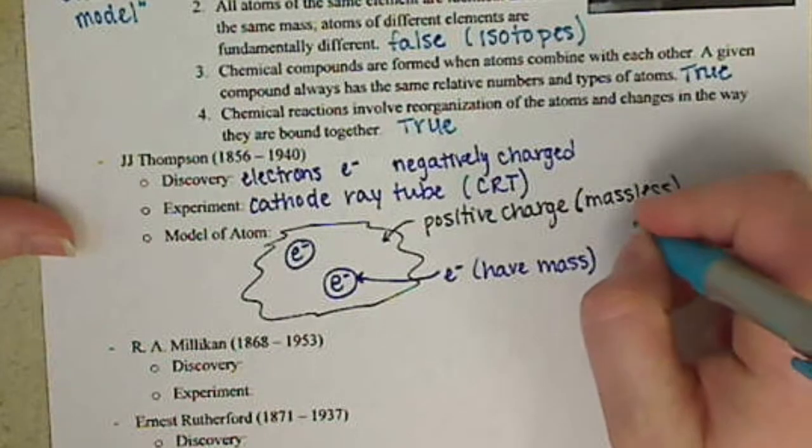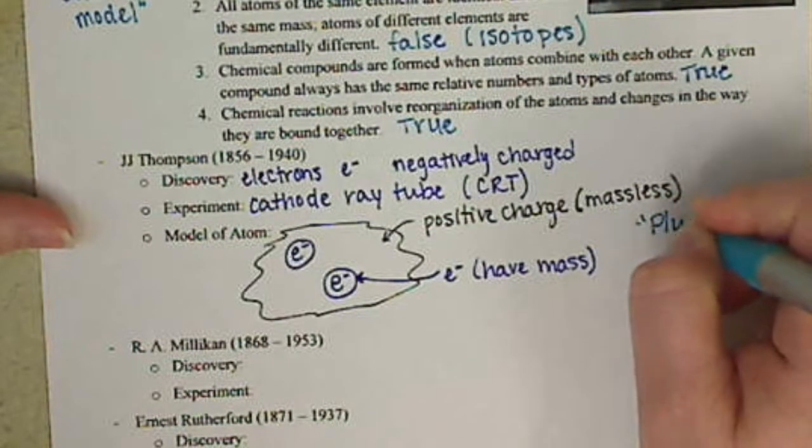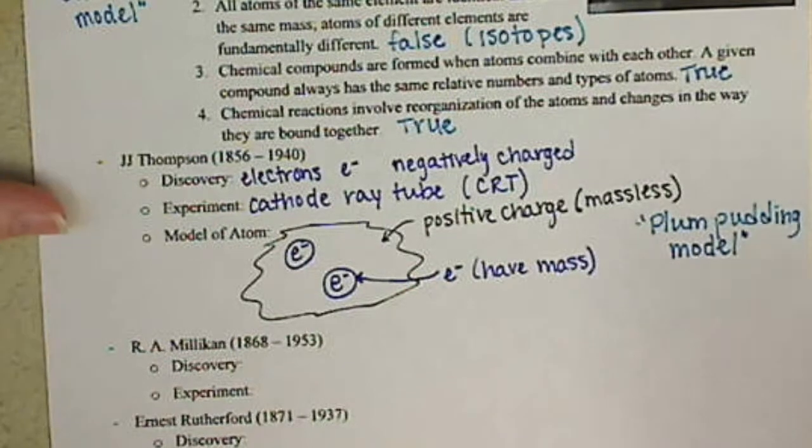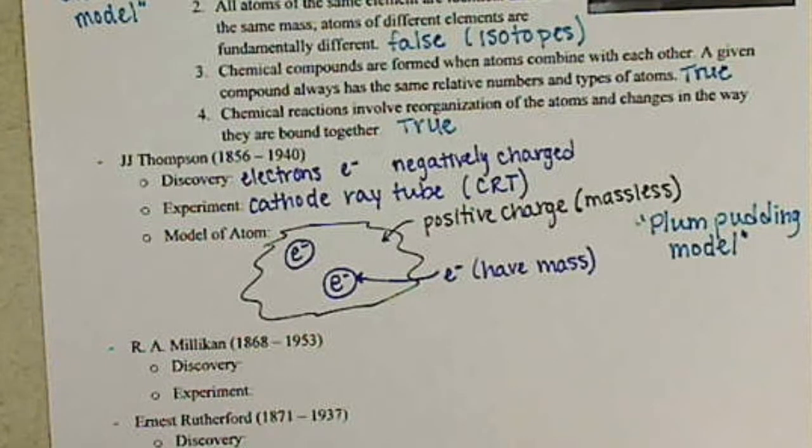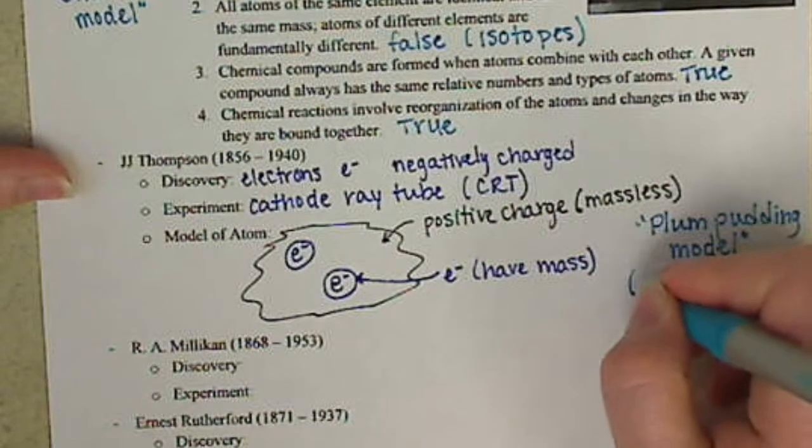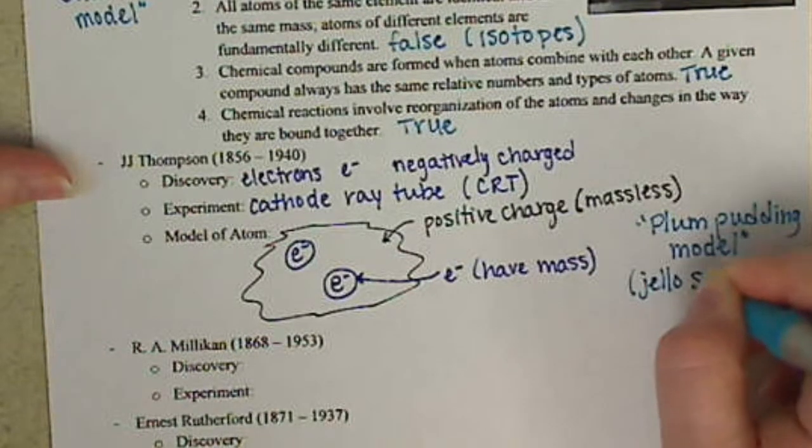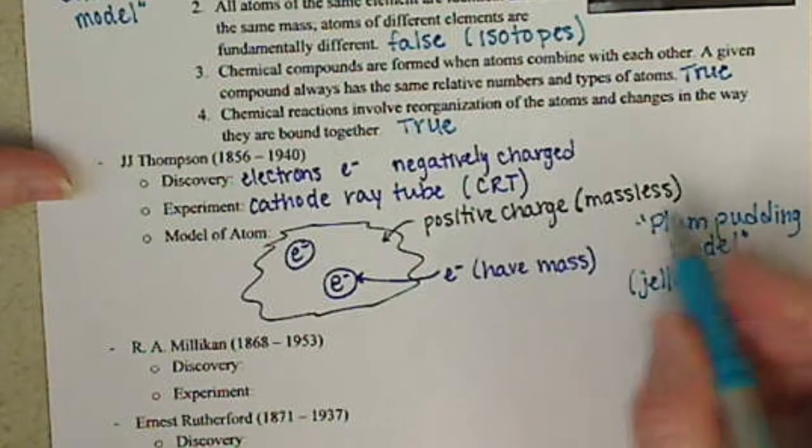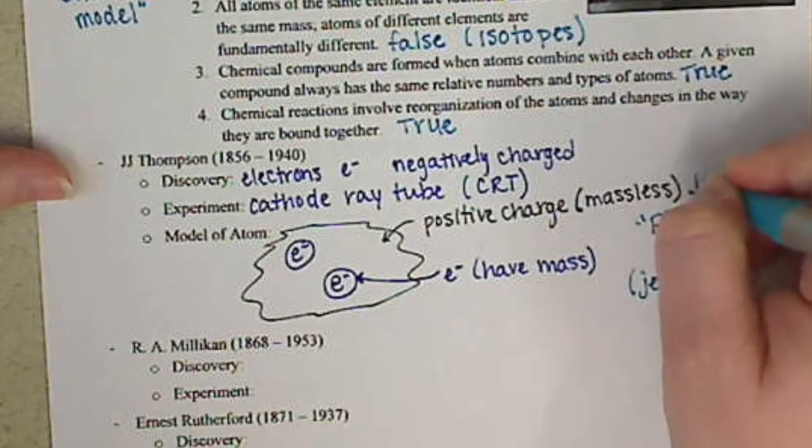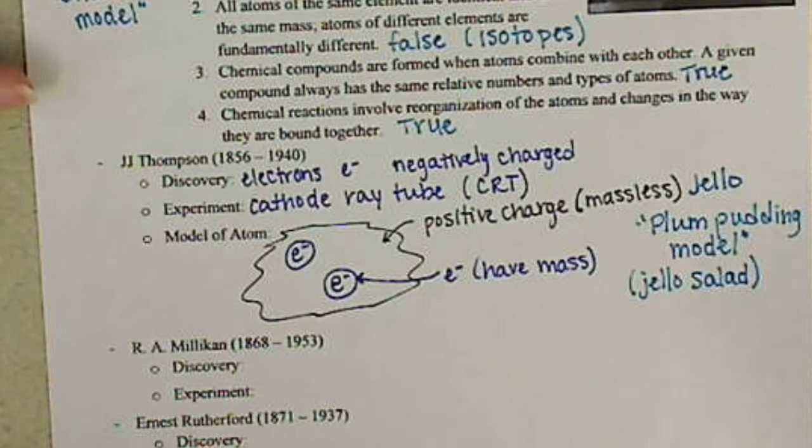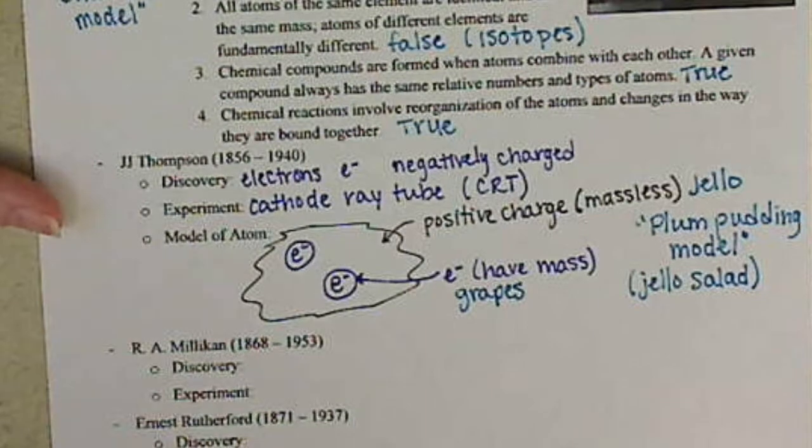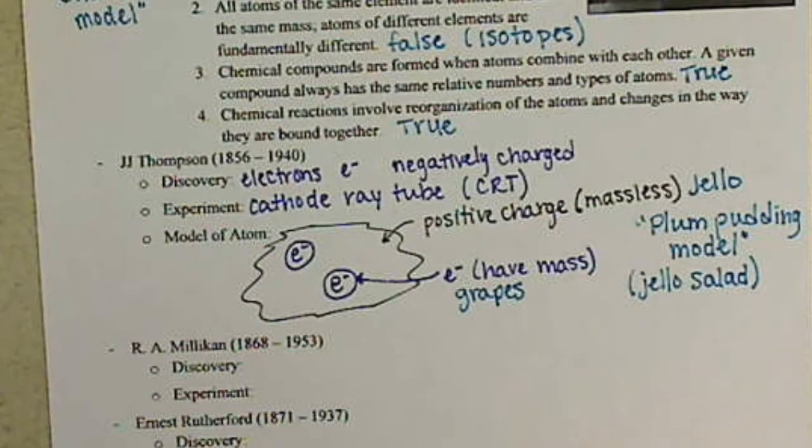The nickname for this is technically it's the plum pudding model. I believe plum pudding is a British dessert. Not quite sure on that. Don't quote me. But I like to think of this as the jello salad model. So our positive charge that's massless, I call this the jello. Jello is very light and fluffy. The electrons are the grapes or the fruit that are put in jello salad. So that's kind of how I think of it.